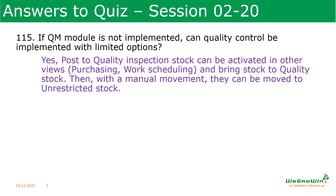If the QM module is not implemented, can quality control be implemented with limited options? Yes, we can do it. We can engage the post-to-quality inspection stock trigger point, which is available in the Purchasing view for purchasing items and in the Plant Data/Storage view for production items. When triggered, materials coming from purchase or production will be posted into the quality inspection stock.